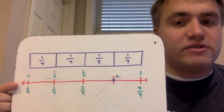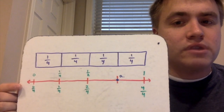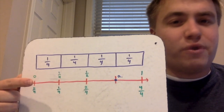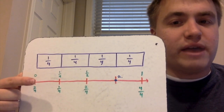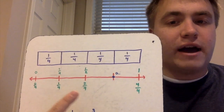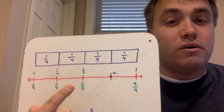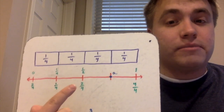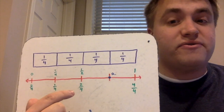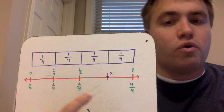So starting all the way over here, this is zero, or zero-fourths. If we move over about one-fourth of the line, we have one-fourth. If we move over about half of the line, or just another one-fourth increment, we have two-fourths, which is about one-half of the whole line.